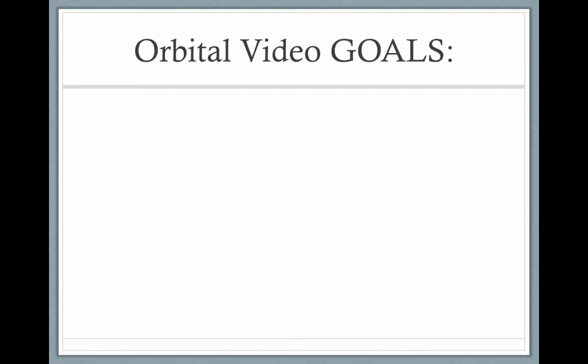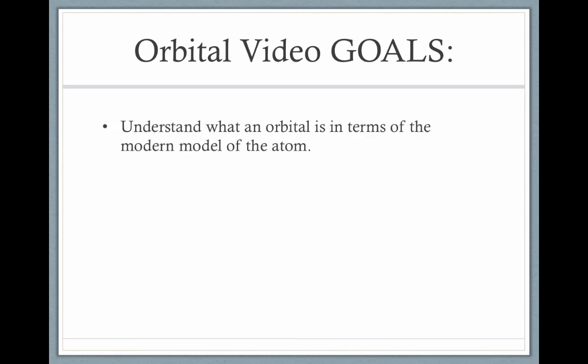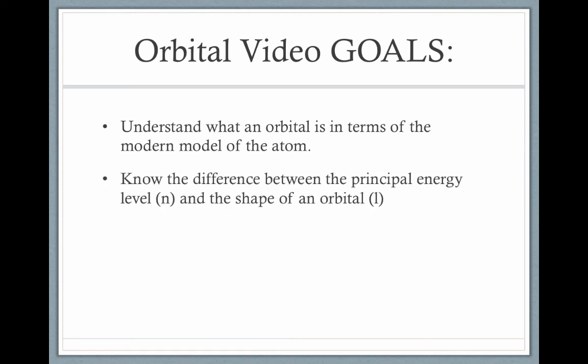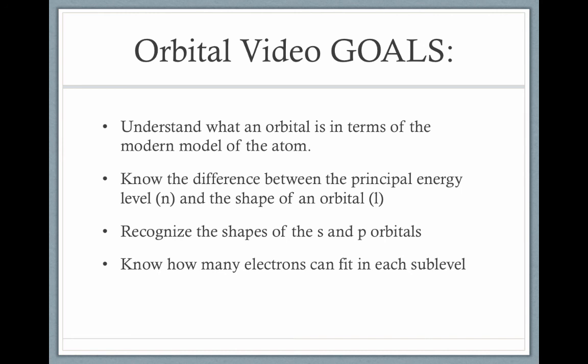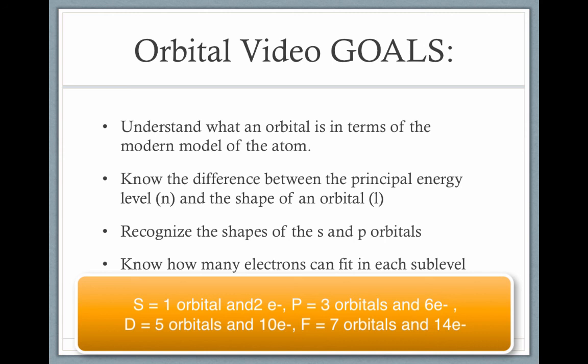That brings us to the end of this video. Let's review our goals. First, we looked at what an orbital is in terms of the modern model of the atom — an orbital is an area of probability where an electron is most likely to be found. Then we looked at the difference between the principal energy level (n equals 1, 2, 3, and so on) and the shape of the orbital, or sublevel (s, p, d, or f). You should be able to recognize s orbitals as being spherical and p orbitals as being shaped like bunny ears. Finally, we looked at how many orbitals and electrons can fit in each sublevel: the s sublevel has one orbital holding two electrons; the p sublevel has three orbitals holding six electrons; the d sublevel has five orbitals holding ten electrons; and the f sublevel has seven orbitals holding fourteen electrons.